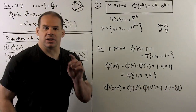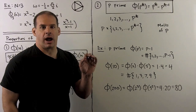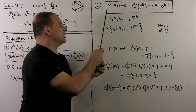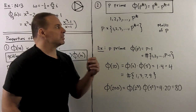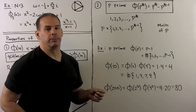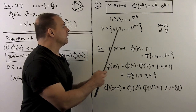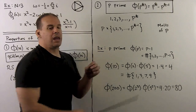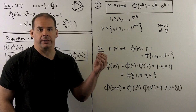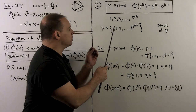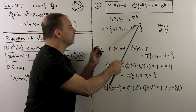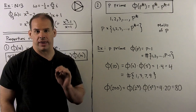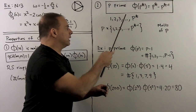With multiplicativity, it's enough to compute φ on each prime power and stitch things together. The rule: p prime, φ(p^k) = p^k − p^(k−1). To see this, we consider all elements 1 through p^k and discard multiples of p, which are p·1, p·2, …, p^(k−1). That leaves p^k − p^(k−1) elements.